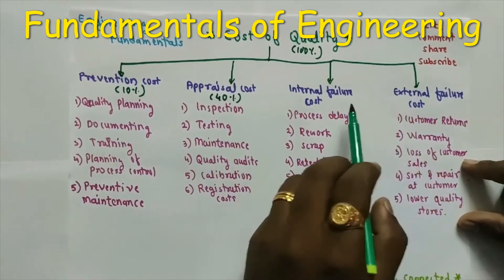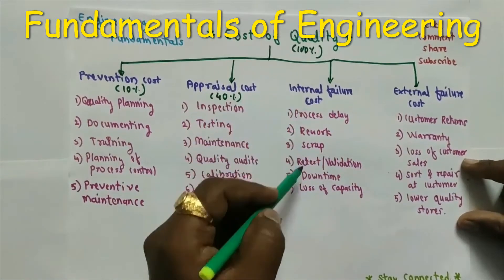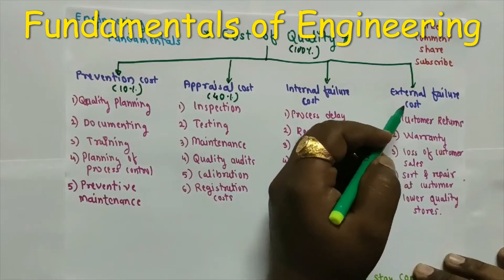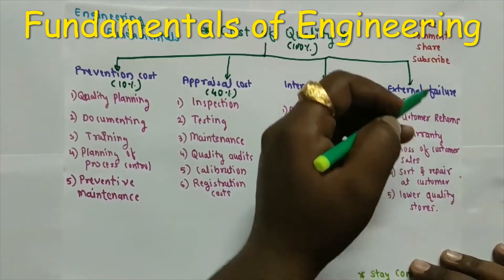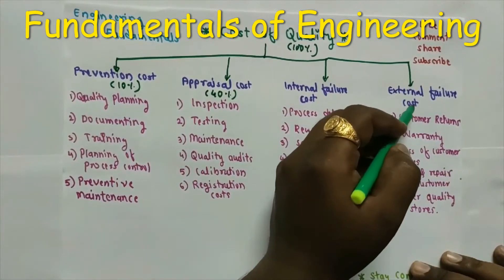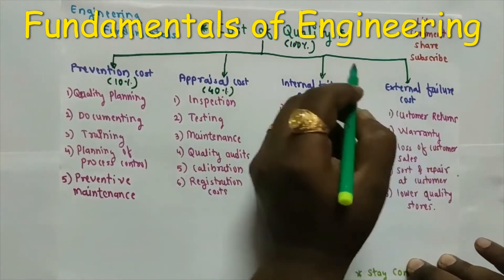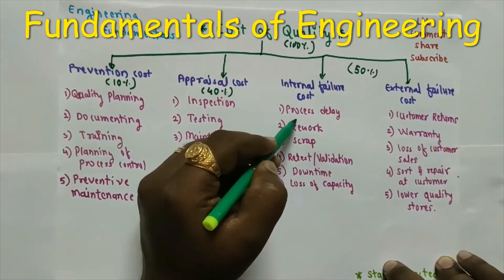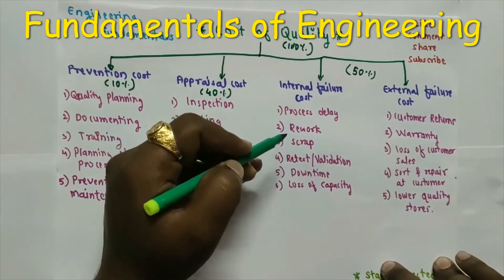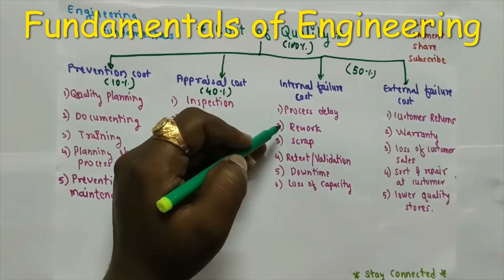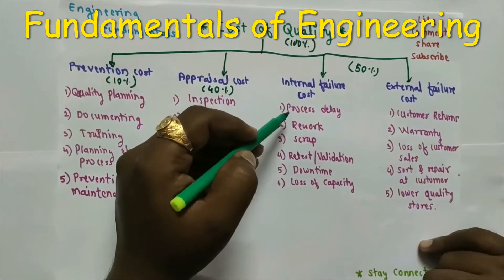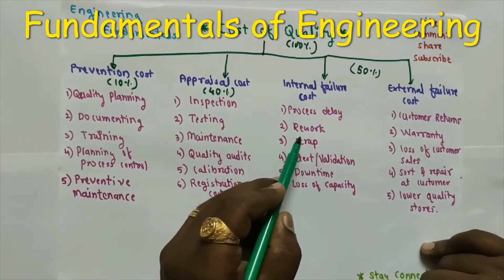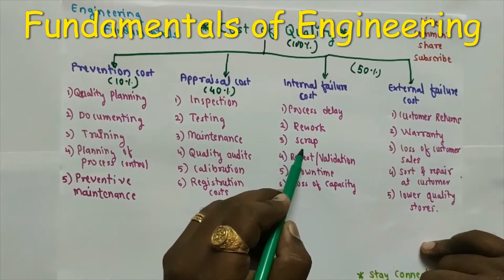The remaining is failure cost, which is of two types. Internal failure cost occurs when failure happens inside the industry during manufacturing. It includes process delay — when a product is not manufactured within the stipulated time — as well as rework, remachining, and scrapping of defective parts that are not manufactured to the proper dimension.